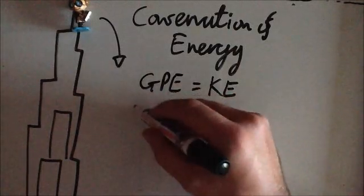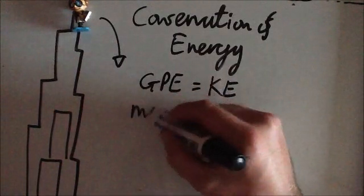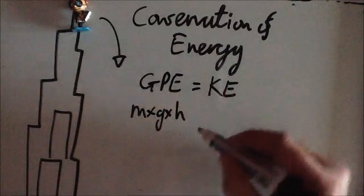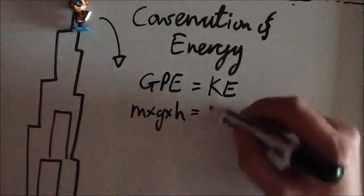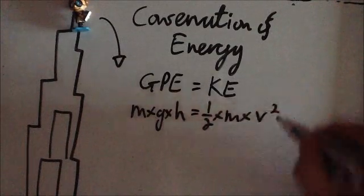Now, gravitational potential energy, you'll get the equation sheet in the exam, is calculated as mass times gravity times height. Kinetic energy is calculated as half times the mass times the velocity squared.